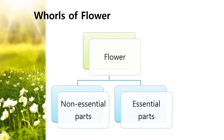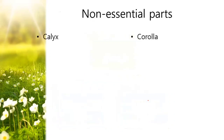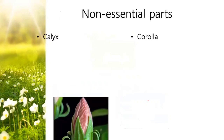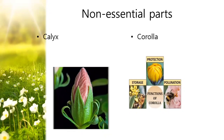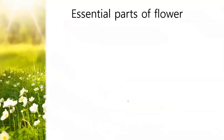Four whorls from outer to inner: outermost is calyx, the second one is corolla, then androecium, and gynoecium. The non-essential parts are calyx and corolla. When in bud condition, calyx protects the flower. It is involved in photosynthesis because it is green in colour. Corolla protects the sex organs and attracts the pollinators. Corolla also secretes nectar for food storage. The essential parts of the flower are androecium and gynoecium. Androecium is the male reproductive part of the flower.